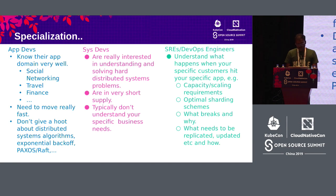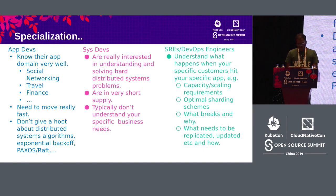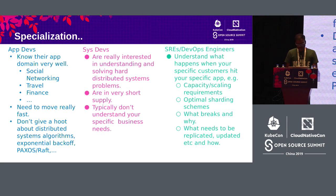Application developers don't give a hoot about distributed system problems. In the middle, we have system developers — people who are interested in understanding and solving complex distributed system problems. They are extremely short in supply, and problematically, they don't understand your business needs. On the right-hand side, we have SREs and DevOps engineers — people who understand how your actual application behaves in real life: what happens when a customer hits your application, how much capacity you need, what your sharding looks like, what breaks and why. They're not necessarily distributed system experts or application domain experts, but they understand how to run systems well.